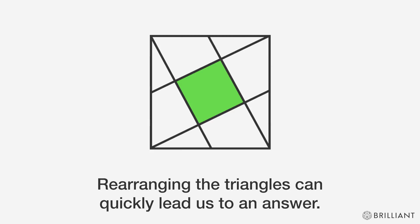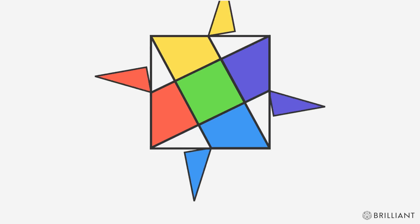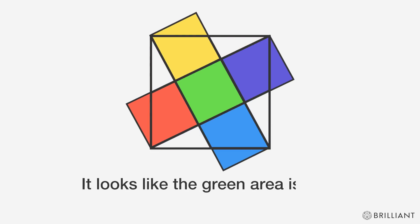Rearranging the triangles can quickly lead us to an answer. It looks like the green area is a fifth of the area of the whole square.